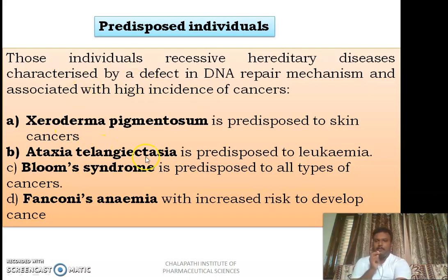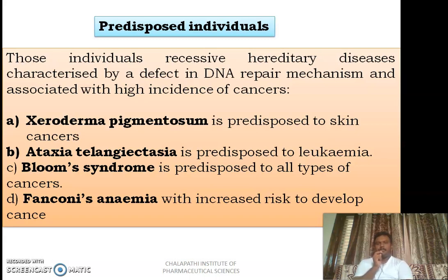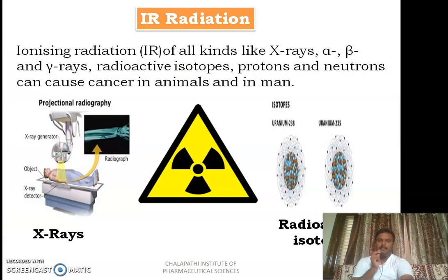These are the different diseases where there is a defective DNA repair mechanism, such as xeroderma pigmentosum, ataxia telangiectasia, Bloom syndrome, and Fanconi anemia.